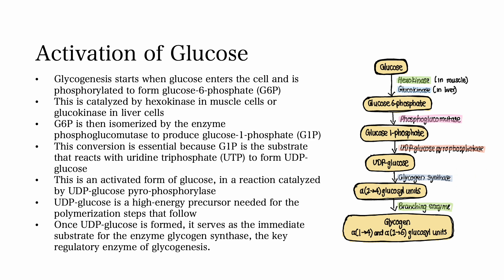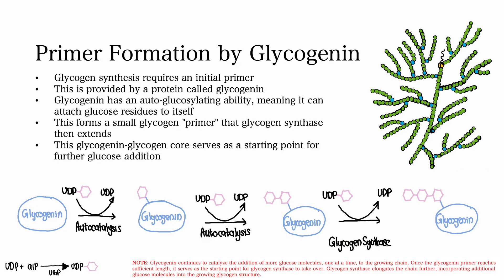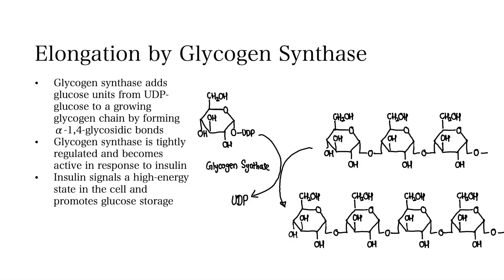Step 2: Primer formation by glycogenin. Glycogen synthase requires an initial primer, which is provided by a protein called glycogenin. Glycogenin has an auto-glycosylating ability, meaning it can attach glucose residues to itself, forming a small glycogen primer. Glycogen synthase can then extend this glycogen primer. This glycogenin-glycogen core serves as the starting point for further glucose addition.